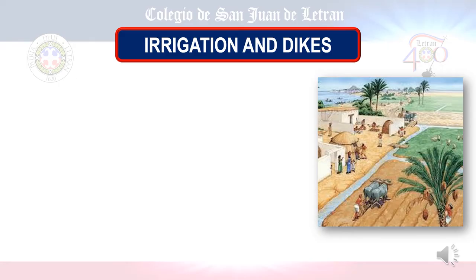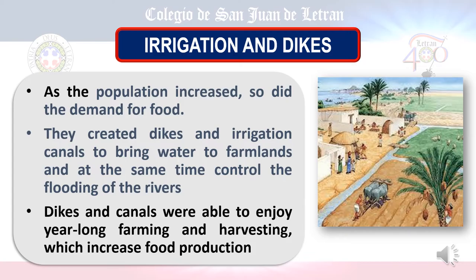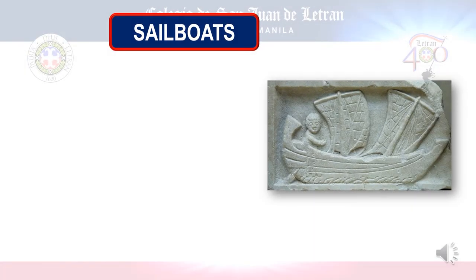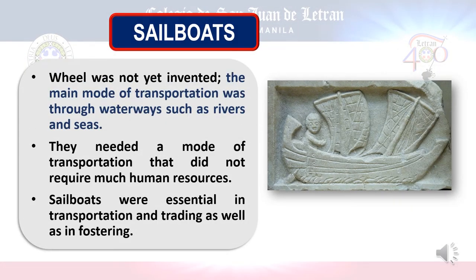The Sumerians invented irrigation and dikes to increase mass production of crops. They built these to bring water to farmland and to control flooding. They also invented sailboats, as the first mode of transportation was not on wheels but on water. People in the past could not cross rivers and seas, so the sailboat was invented to solve the problem of sea transportation.